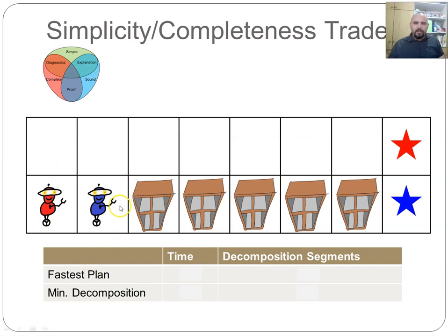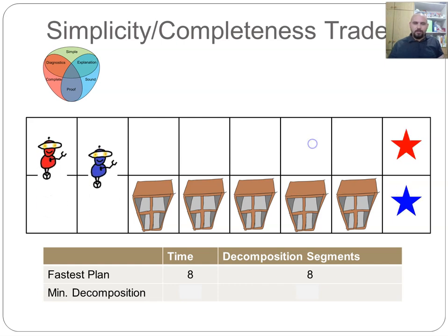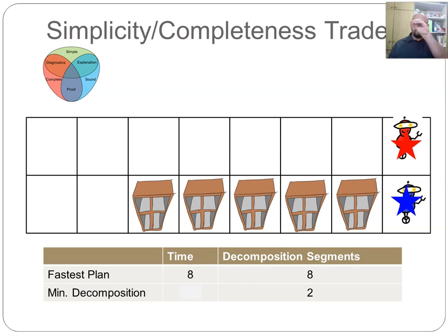Consider this example where blue and red agents try to reach their targets through a corridor. They can't go through the corridor together because they'll collide. The fastest plan is to send them one after the other, in which case they reach their targets in eight time steps. The problem is that the decomposition of this plan requires eight segments, because in each time segment the agents step on each other's paths. On the other hand, there is another plan where we send the blue agent first to complete its target and then send the red agent—this plan has only two decomposition segments. The trade-off is that this plan is much longer. So if I want to explain short plans, I may need many segments; if I want few segments, I may sacrifice the length of the plan or even the existence of a plan.